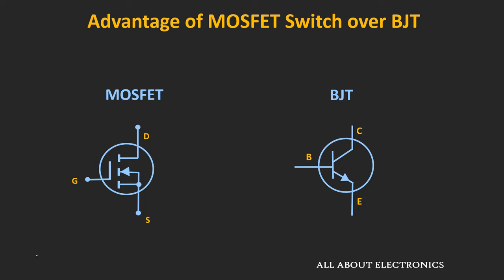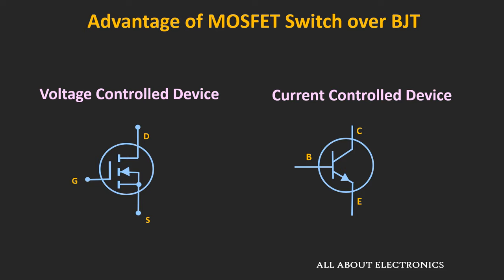The BJT can also be used as a switch, but the MOSFET has certain advantages over the BJT. The MOSFET is a voltage control device — just by controlling the gate-to-source voltage, the MOSFET can be turned ON or OFF, and in this way it can be used as a switch. On the other hand, the BJT is a current control device — by controlling the base current, the BJT can be driven either into saturation or the cut-off region, and in this way it can be used as a switch.